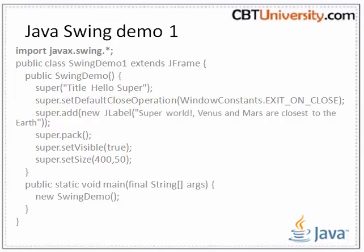The first import includes all the public classes and interfaces from the javax.swing package. The SwingDemo class extends the JFrame class. The JFrame class implements a window with a title bar and close control. This SwingDemo constructor initializes the frame by first calling the superclass constructor, passing the window's title parameter.